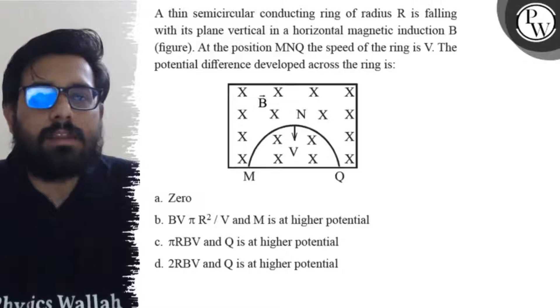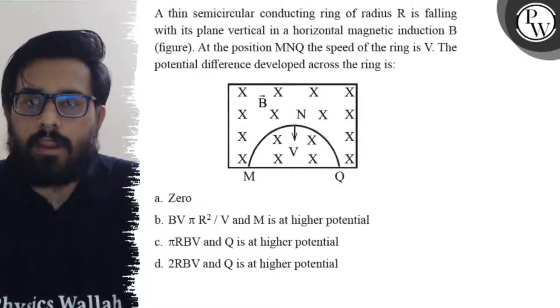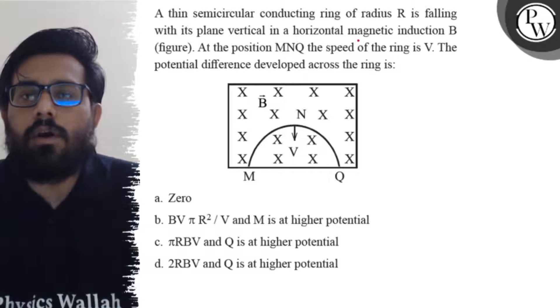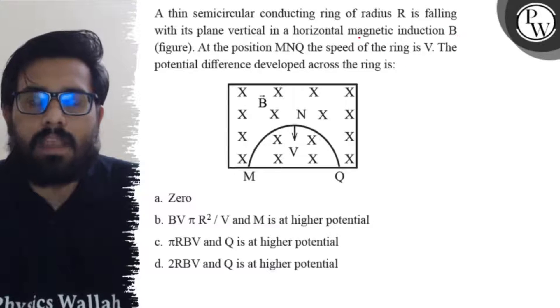Hello bachos. So let us see the question. A thin semicircular conducting ring of radius R is falling with its plane vertical in a horizontal magnetic induction B as shown in the figure.